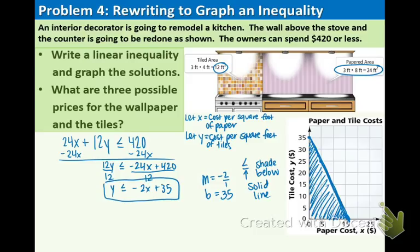Now the last question says what are the 3 possible prices for wallpaper and tiles? Well basically what you can do is just pick any 3 pairs of coordinate points in this graph. So the ones that I chose are $5 for the wallpaper and $25 for the tiles.